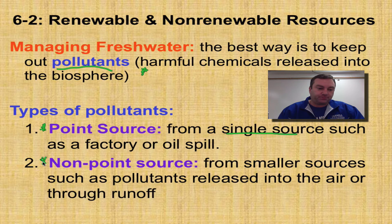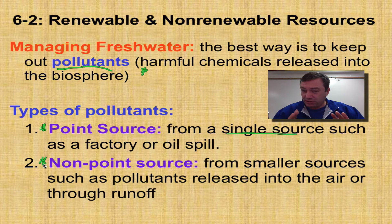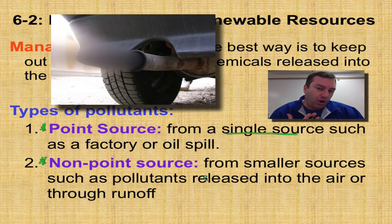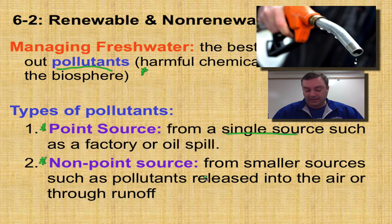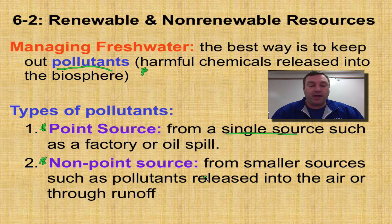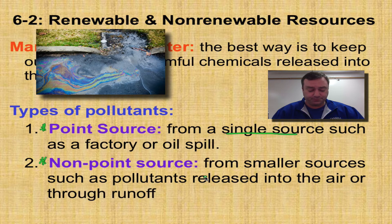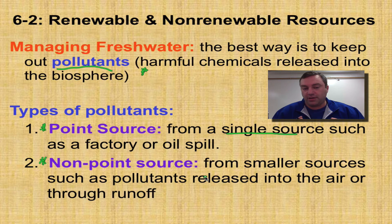A non-point source is actually a little bit more common. These come from smaller sources that you can't pinpoint to just one single individual. Think about every single car on the highway, every single gas station where customers spill a little bit of gasoline. Human beings will throw toxic chemicals away into the trash, which can eventually get into the water supply. Some people pour oil and harmful chemicals into the storm sewer, and those are going to go into the water supply. You can't trace it to a single individual — it's coming collectively from humanity.